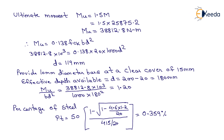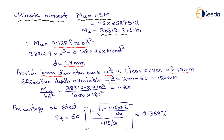Ultimate moment MU = 25875.2 × 1.5 = 38812.8 N·m. Using the formula MU = 0.1838 × fck × B × D², and putting all values, we get D required = 119 mm. Providing 10 mm diameter bar with a clear cover of 15 mm, effective depth available d = 200 − 20 = 180 mm (20 mm is clear cover). Ratio MU / (B × d²) = 1.2.